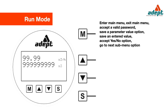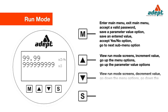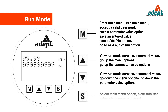Up arrow key: view run mode screens, increment value, go up the menu options, go up the parameter value options. Down arrow key: view run mode screens, decrement value, go down the menu options, go down the parameter value options. S key: select main menu option, clear totalizer value, shift.